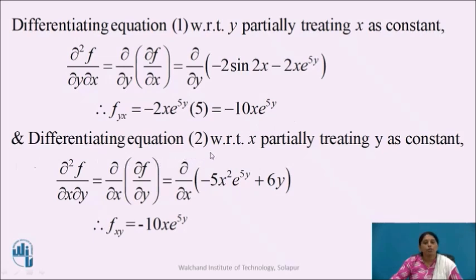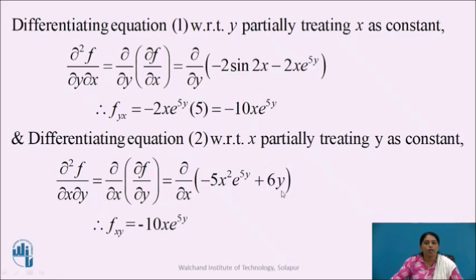And differentiating equation 2 with respect to x partially, treating y as constant, gives us ∂²f/∂x∂y. Substituting ∂f/∂y gives ∂/∂x of (−5x²e^(5y) + 6y). −5e^(5y) is constant and the derivative of x² is 2x, so f_xy = −10x·e^(5y). The derivative of 6y is 0 as y is treated as constant. So we get f_xy = −10x·e^(5y).